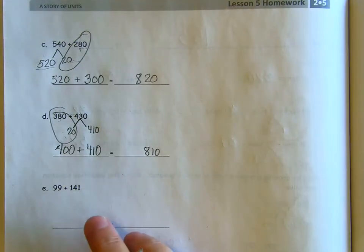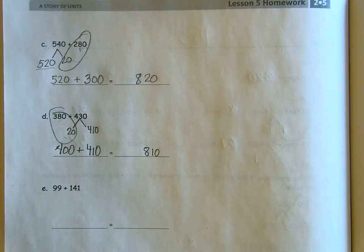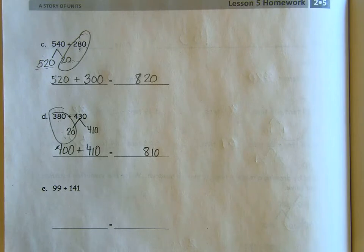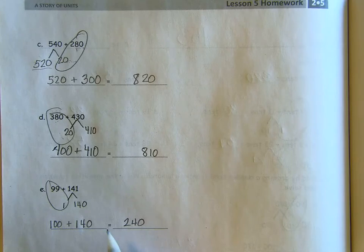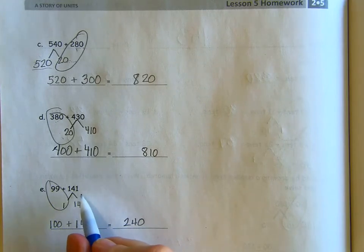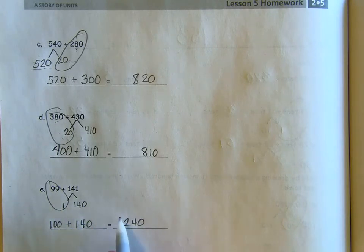I want you to do this next one by yourself. Pause the video. And when you're ready to check your work, push play again. 99 is very close to the next 100. We only need one more. We take it from 141, which leaves us with 140. So we have 100 plus 140. 240.